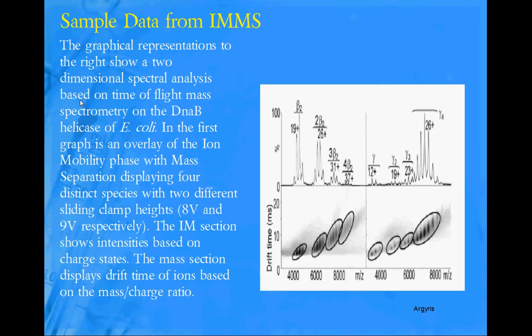Here is an example of the data. You can see on the right are two different sets of data based on the clamp heights. The left is an 8-volt and the right is a 9-volt. The top part is the ion mobility part where you can see the actual charge and peaks, and those are the separate conformations of a beta 2, which is the dimer they use for comparison.